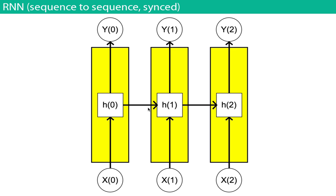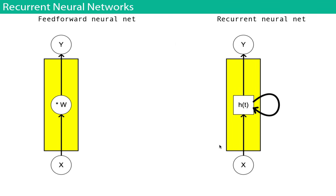You can also have sequence-to-sequence where there's a correspondence between each element of the input and output. For example, video classification — using information from previous video frames to guide processing of the current frame, such as tracking a blob or object over time. That concludes the slides.